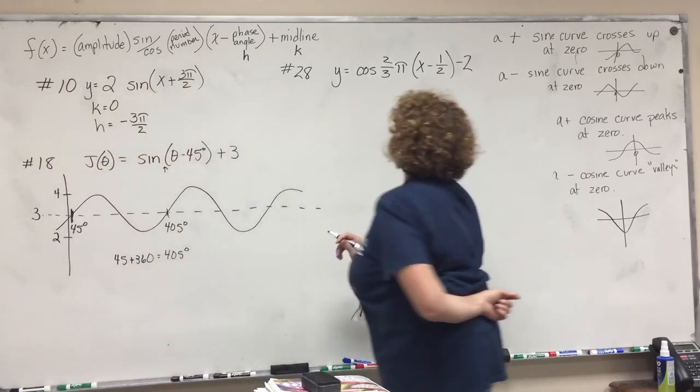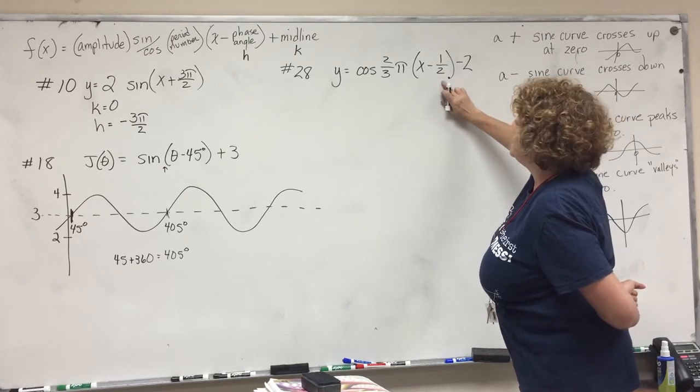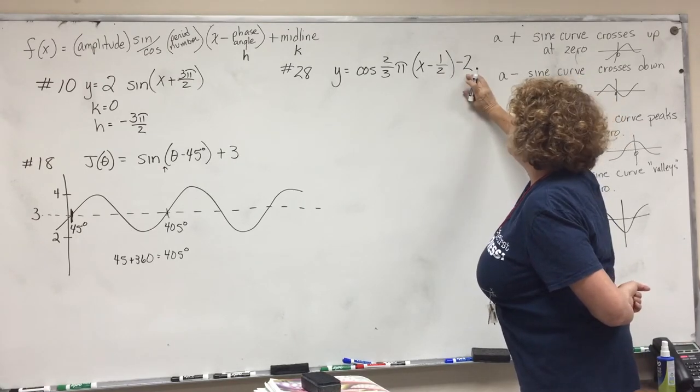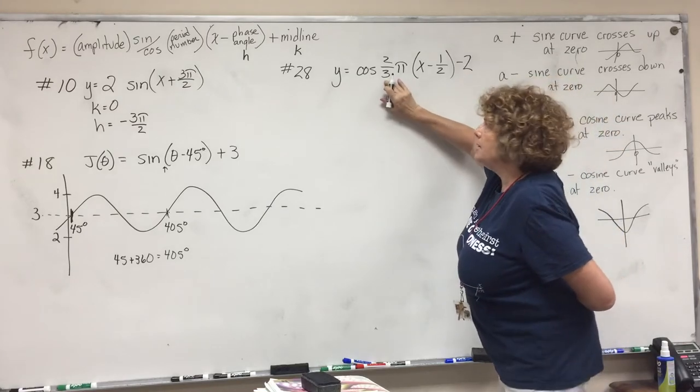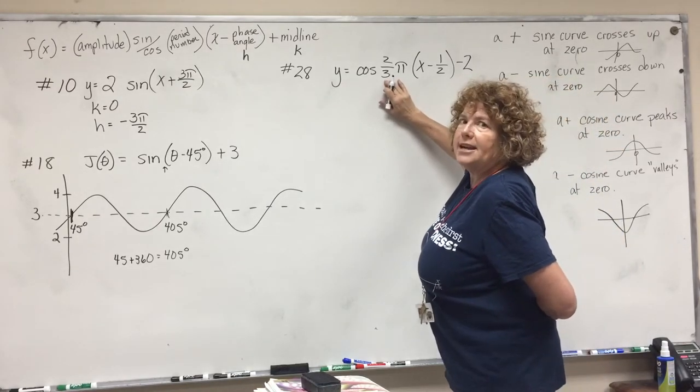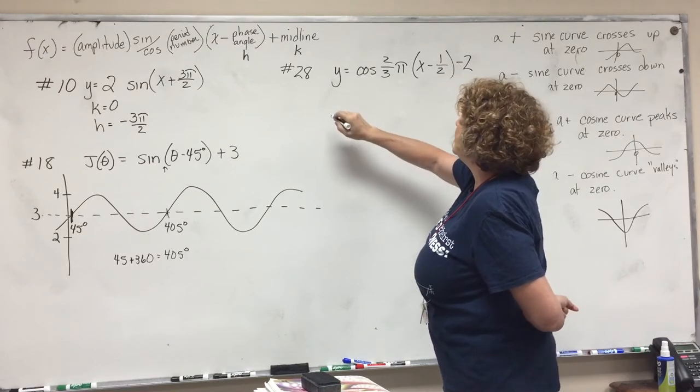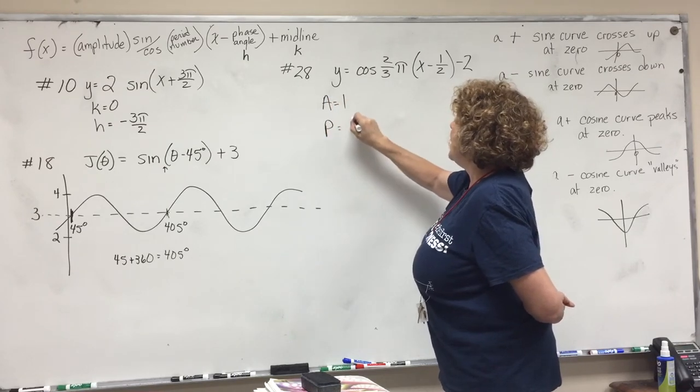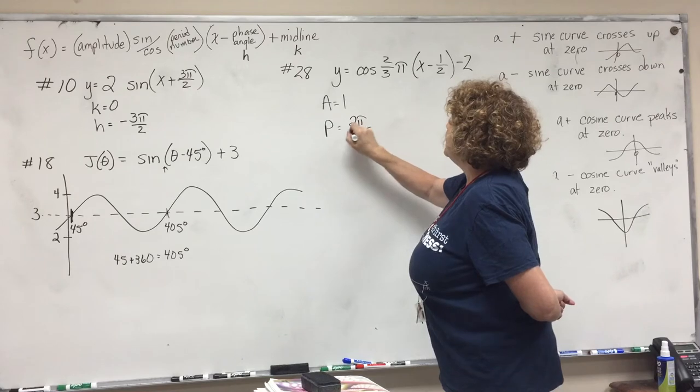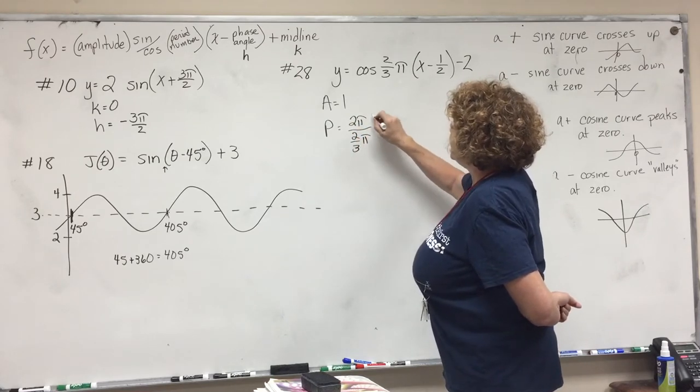So let's have a look at this one. This one looks really complicated—it not only has a phase shift but it also has a new midline and it's got a period number. So the only thing that it's got going for it is that its amplitude is 1. So let's just write some of these things down. The amplitude is 1, the period is now 2π divided by 2/3π which we can solve.